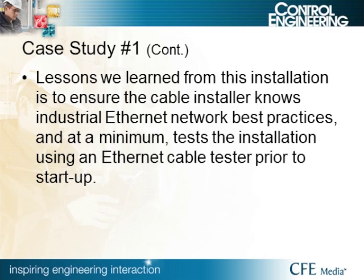Lessons learned from this installation: ensure that whoever's installing knows industrial Ethernet network best practices — there's a lot of information out there from various societies and distributors. At a minimum, make sure you're testing every connection. Get at least an Ethernet cable tester, and if the project can afford it, a cable qualifier or certifier. Cable qualifiers and certifiers keep a record of each cable tested, including length, crosstalk across pairs, what the cable can be rated for, and speed. This data can be printed out and attached as part of the startup record set.